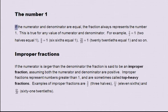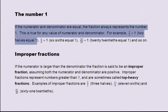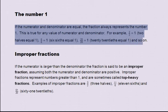The number one. If the numerator and denominator are equal, the fraction always represents the number one. This is true for any value of numerator and denominator. For example, two divided by two equals one, or two halves equals one; six divided by six equals one, six-sixths equals one; twenty divided by twenty equals one, twenty-twentieths equals one, and so on.